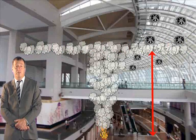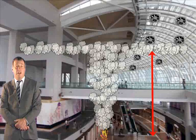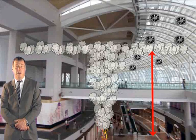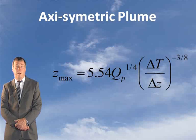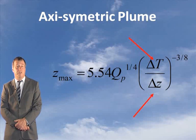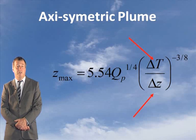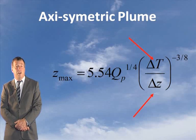The maximum height of an axisymmetric plume against an ambient temperature gradient is shown here. Delta T divided by delta Z is the difference in temperatures between the top of the atrium and the base, divided by the difference in height, as shown here.